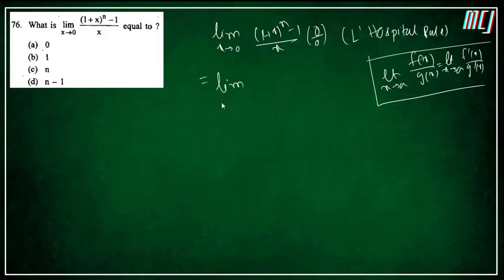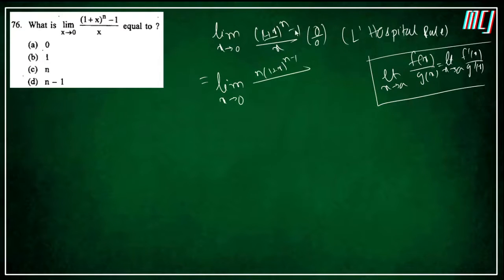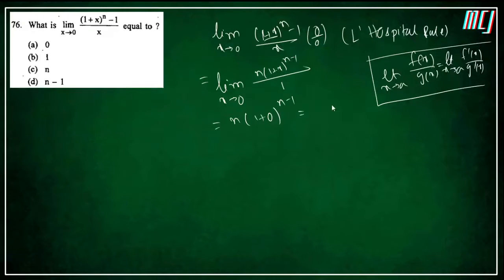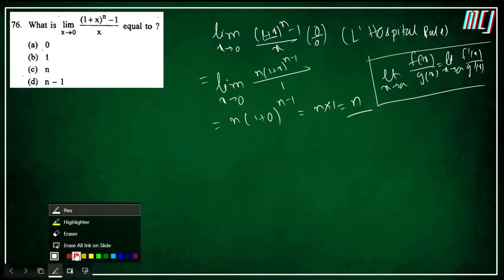L'Hôpital की formula: limit x→a of f(x)/g(x) = limit x→a of f'(x)/g'(x). Derivative लेते हैं: numerator की derivative n·(1+x)^(n-1), denominator की derivative 1. यह non-zero term है तो directly limit substitute करें: n·(1+0)^(n-1) = n·1 = n. So option C is the correct answer.